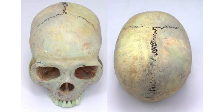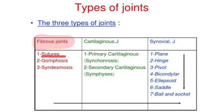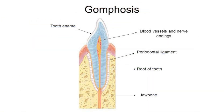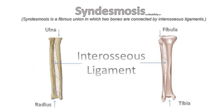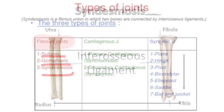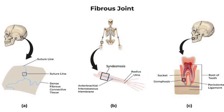Sutures can be found in our skull. The second type is gomphosis, located in the roots of our teeth. Syndesmosis is a fibrous joint characterized by two adjacent bones connected by ligaments, including a strong interosseous membrane. These are the three types of fibrous joints: sutures, gomphosis, and syndesmosis.